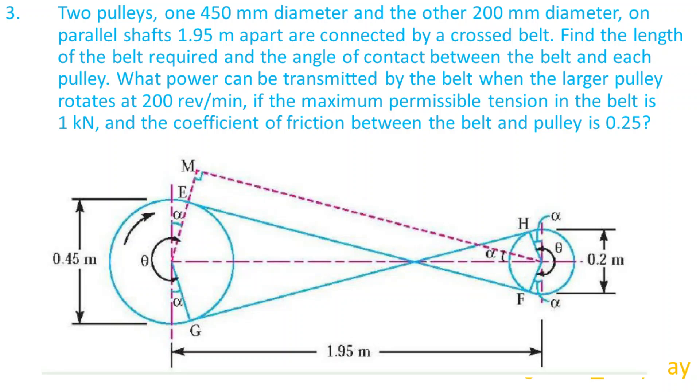What power can be transmitted by the belt when the larger pulley rotates at 200 rpm, if the maximum permissible tension in the belt is 1 kN and the coefficient of friction between the belt and pulley is 0.25.